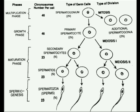In meiosis I, the primary spermatocyte divides to produce two haploid secondary spermatocytes (n = 23 chromosomes). In meiosis II, these two secondary spermatocytes each divide to produce four haploid spermatids, also with 23 chromosomes. The chromosome number changes from 2n (46) to n (23) during meiosis I, and remains 23 in both secondary spermatocytes and spermatids. Finally, in spermiogenesis, spermatids develop into spermatozoa, which also carry 23 chromosomes.